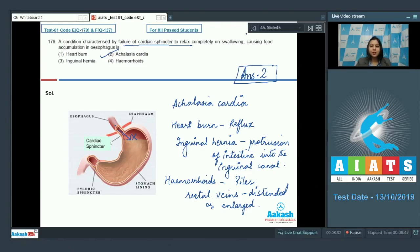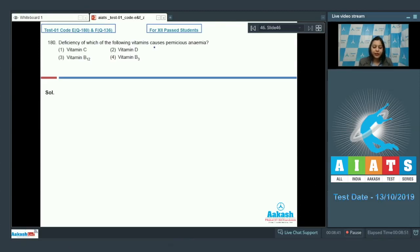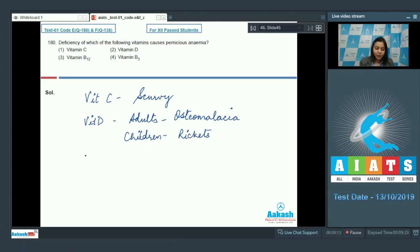Let us see the next question students. Question number 180. Deficiency of which of the following vitamins causes pernicious anemia? Let us see the options. Deficiency of vitamin C commonly causes scurvy. Deficiency of vitamin D causes in adults osteomalacia and in children it causes rickets. Option number 3 is vitamin B12. Deficiency of vitamin B12 causes pernicious anemia and deficiency of vitamin B3 causes pellagra.